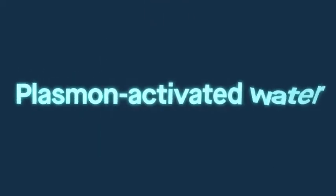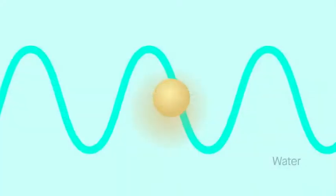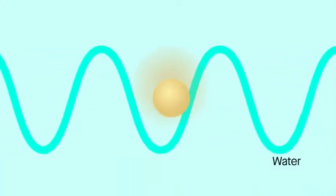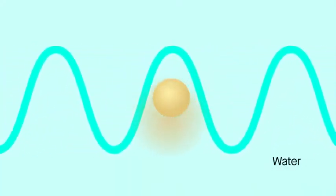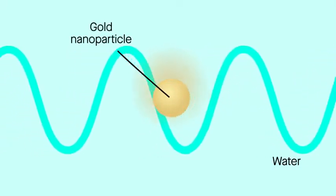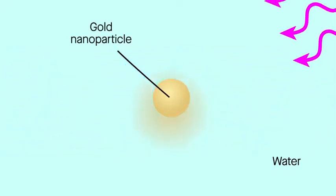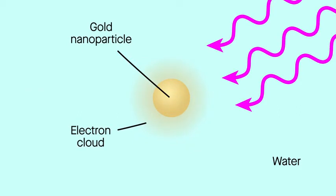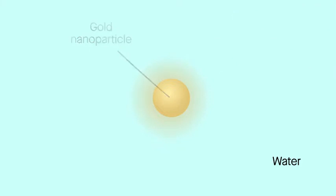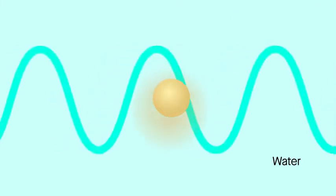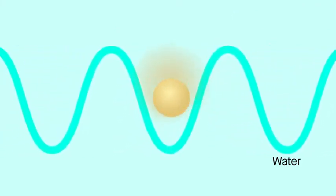This is plasmon-activated water. A plasmon is a form of electromagnetic oscillation created at the interface of two materials, one of which is typically a metal. When light of just the right frequency strikes a metal nanoparticle, for example, the electrons in the particle begin to oscillate at that same frequency. The result is an oscillating electromagnetic field that ripples through the medium surrounding each particle.